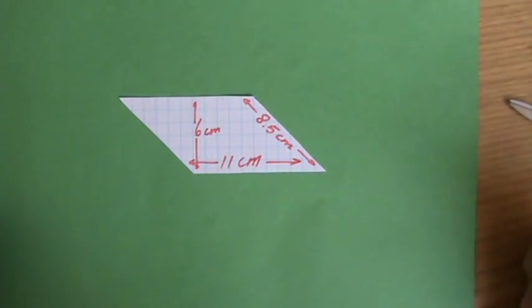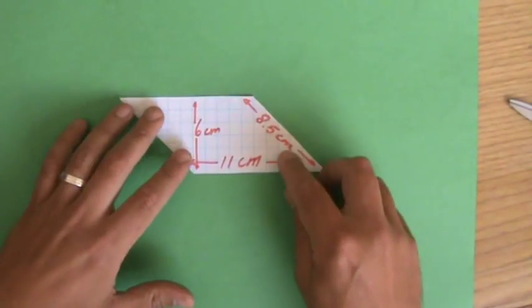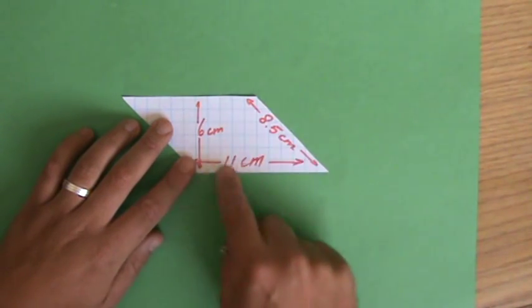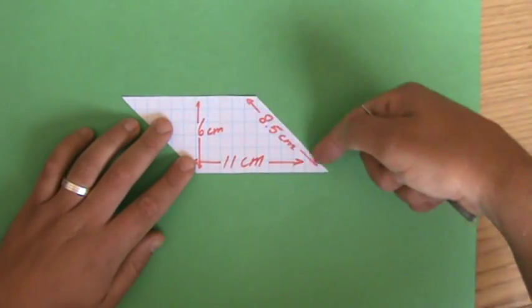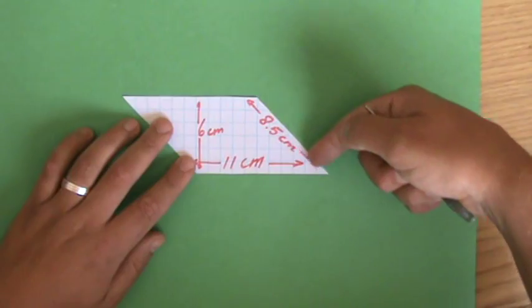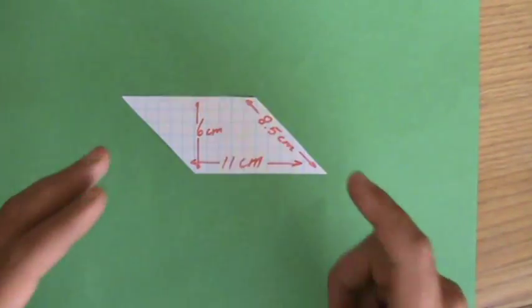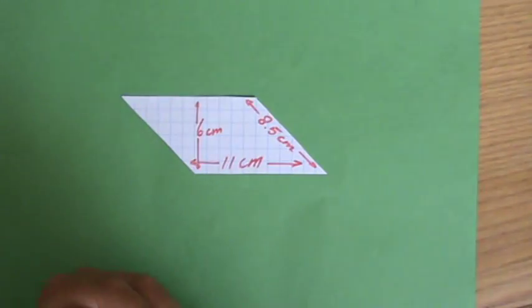We don't have to remember anything then. Okay, so I cut out this parallelogram. And I've said, well, this side is 11 centimeters. The slanted side, this one is 8.5 centimeters. And it is 6 centimeters high. Now, what is, or how do I calculate the area?